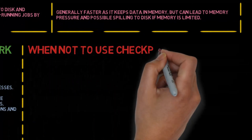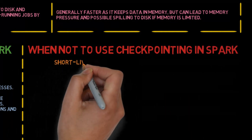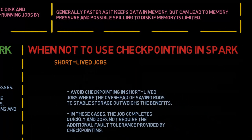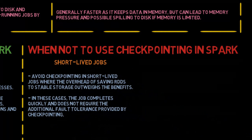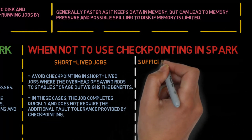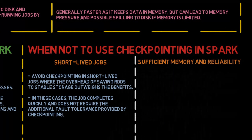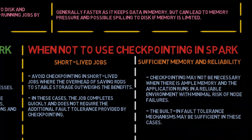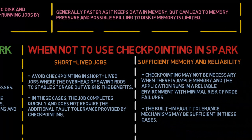When not to use checkpointing in Spark: Short-lived jobs — avoid checkpointing in short-lived jobs where the overhead of saving RDDs to stable storage outweighs the benefits. In these cases, the job completes quickly and does not require the additional fault tolerance provided by checkpointing. Sufficient memory and reliability — checkpointing may not be necessary when there is ample memory and the application runs in a reliable environment with minimal risk of node failures. The built-in fault tolerance mechanisms may be sufficient in these cases.